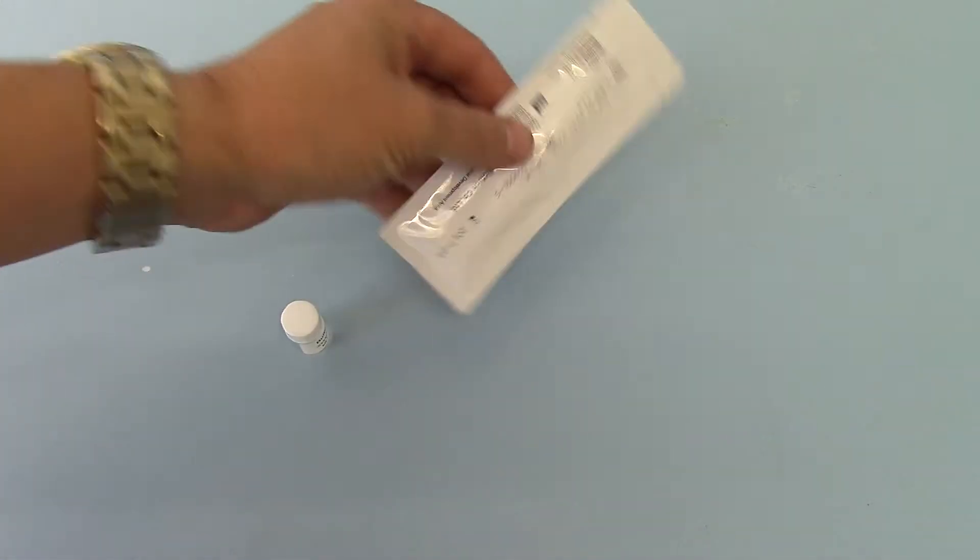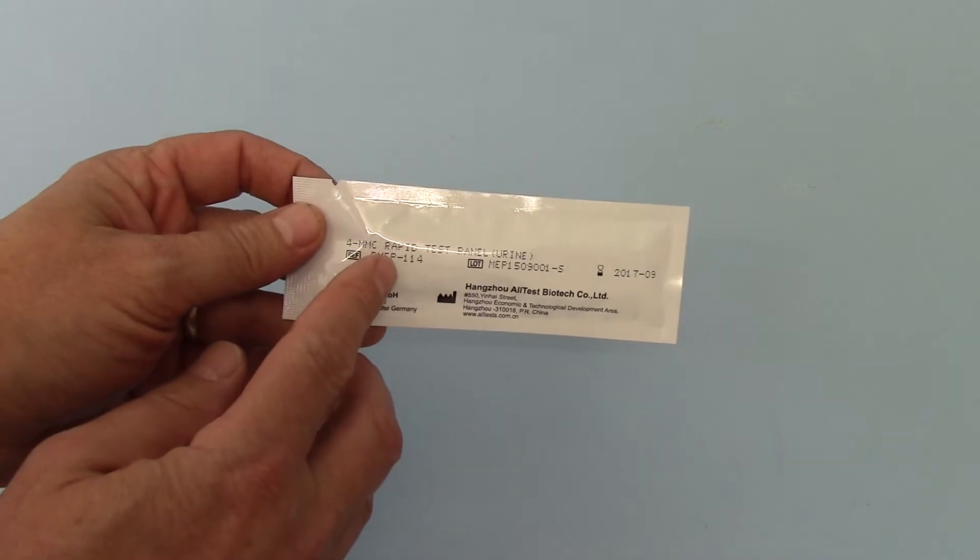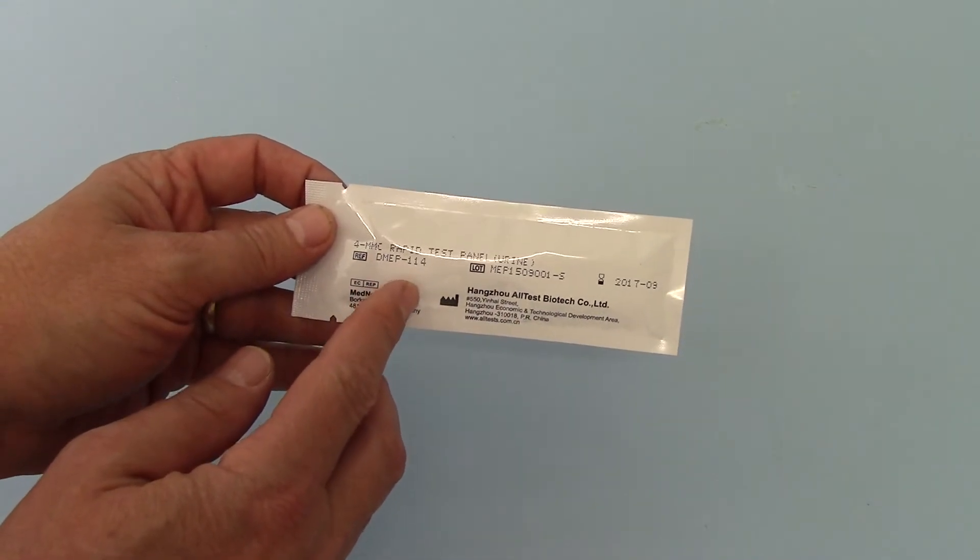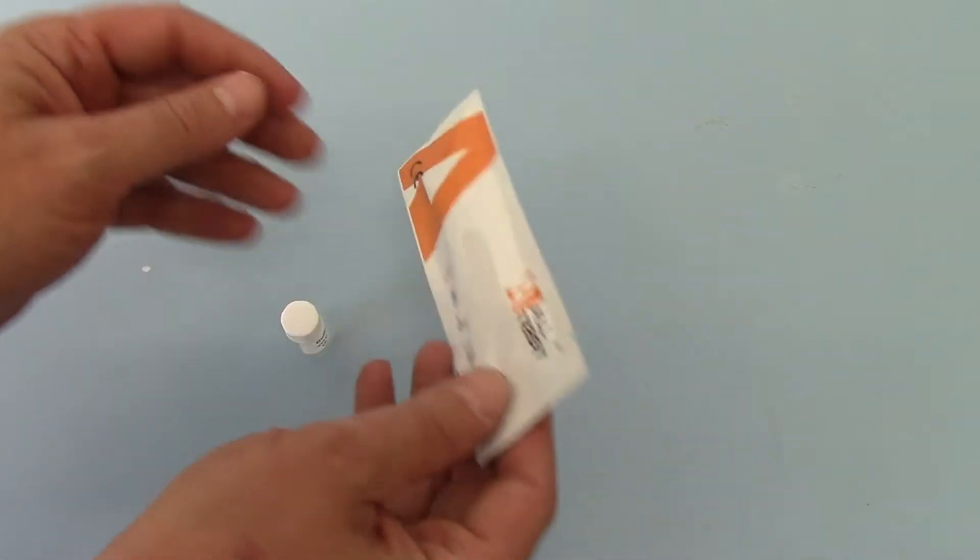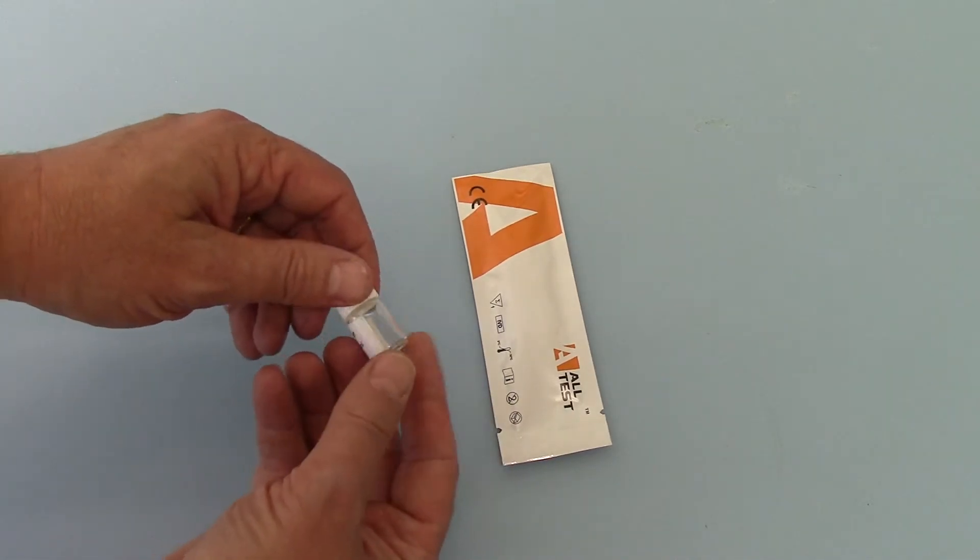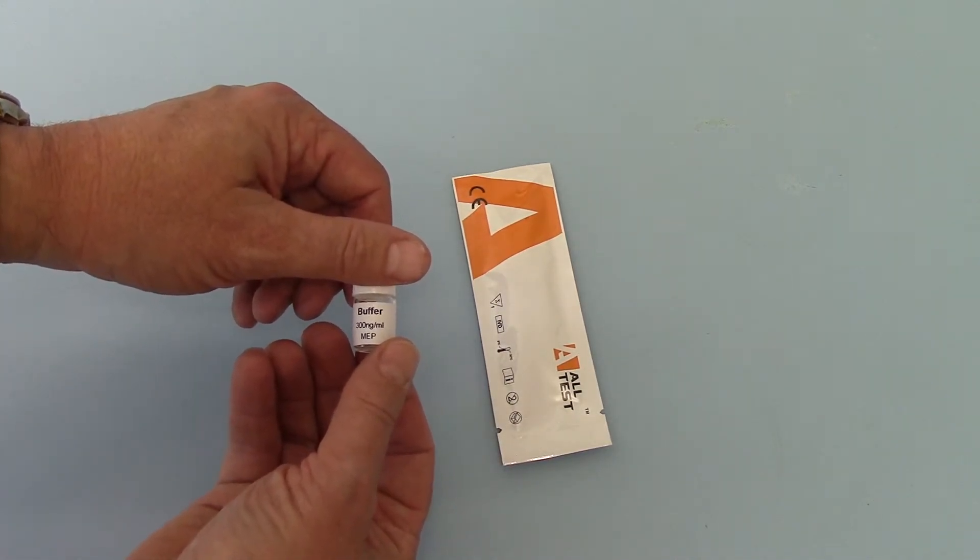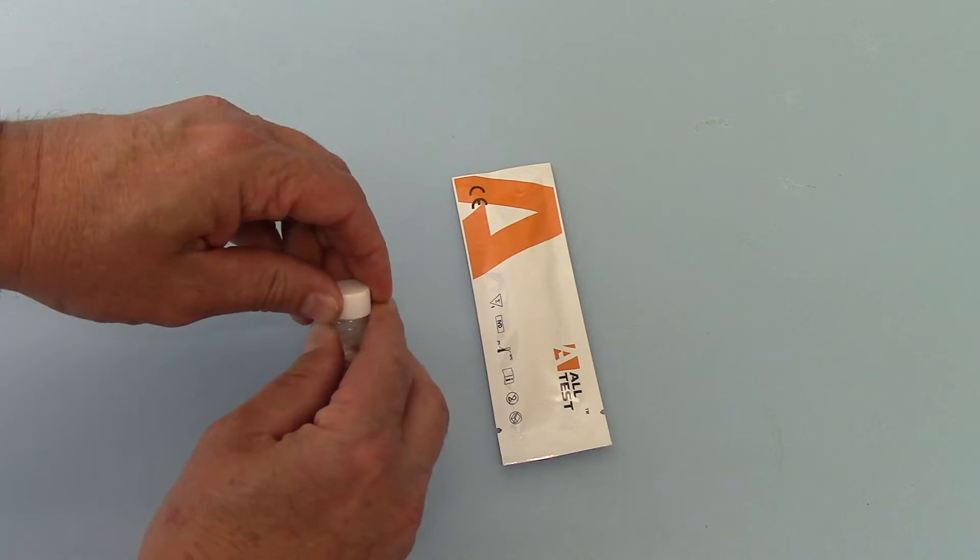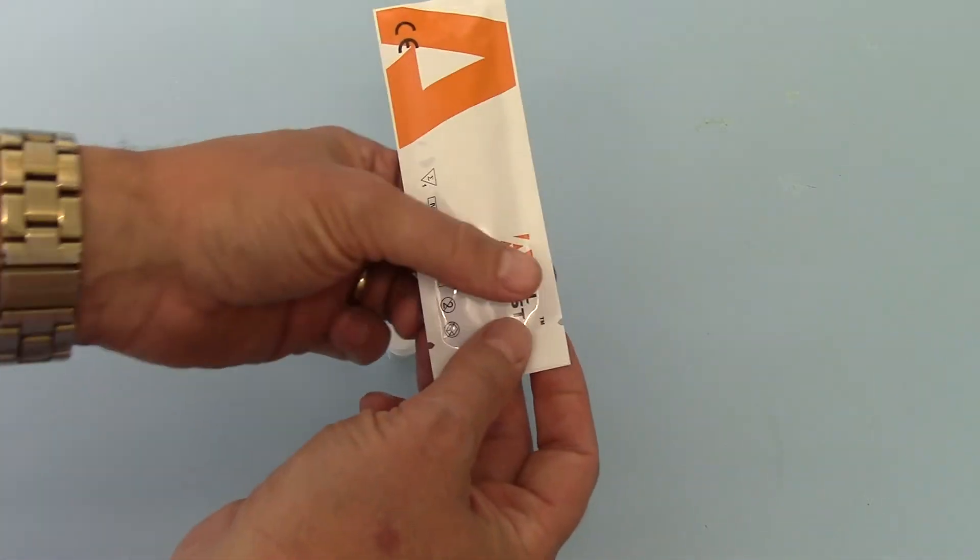So what we have here is the new test 4RNC rapid test panel. They've just come in from AllTest being designed specifically for us and this is a methadrome 300 nanogram buffer control that we're going to actually run the test on.